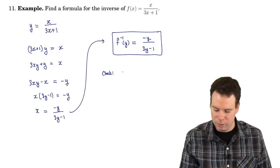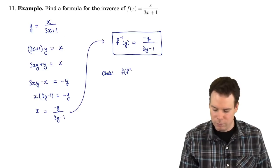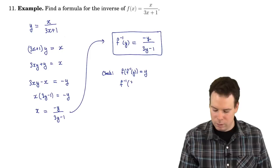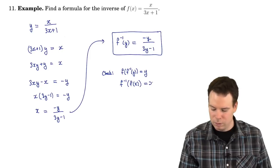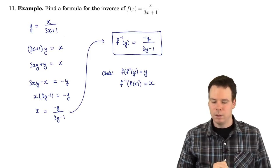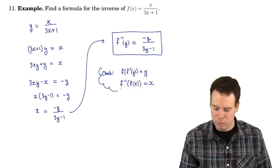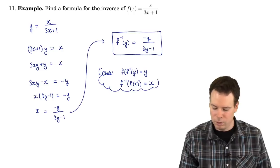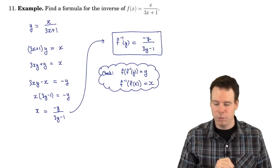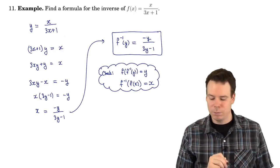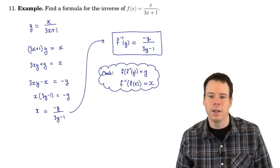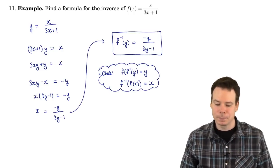I encourage you to check this: verify that f composed with f⁻¹(y) gives y, and also check that composing them in the other direction gives x. Once you find the inverse, you can always verify it's correct by doing the composition and making sure you get the identity.